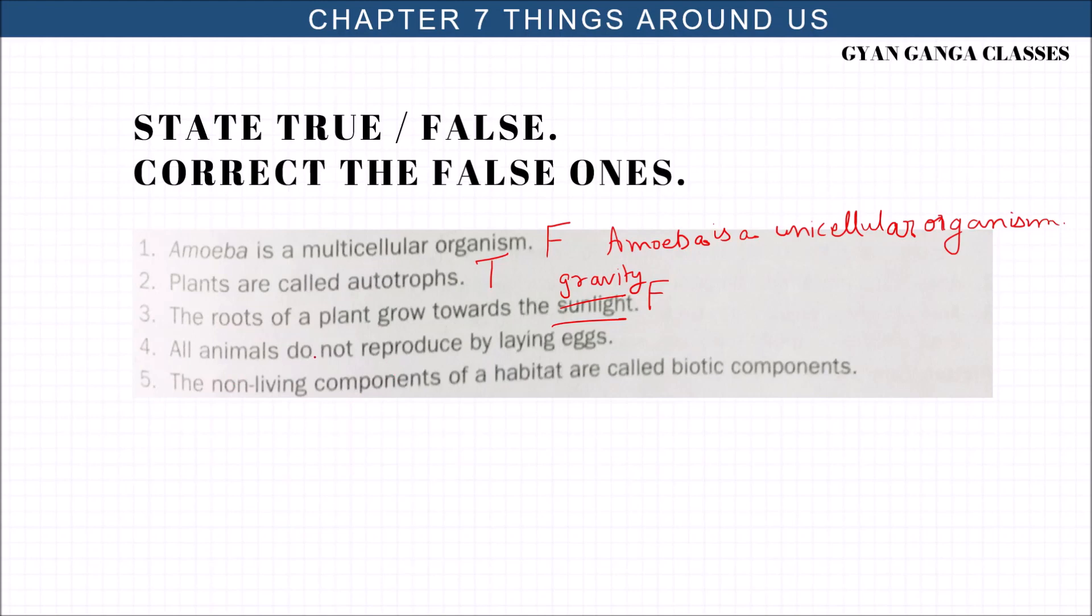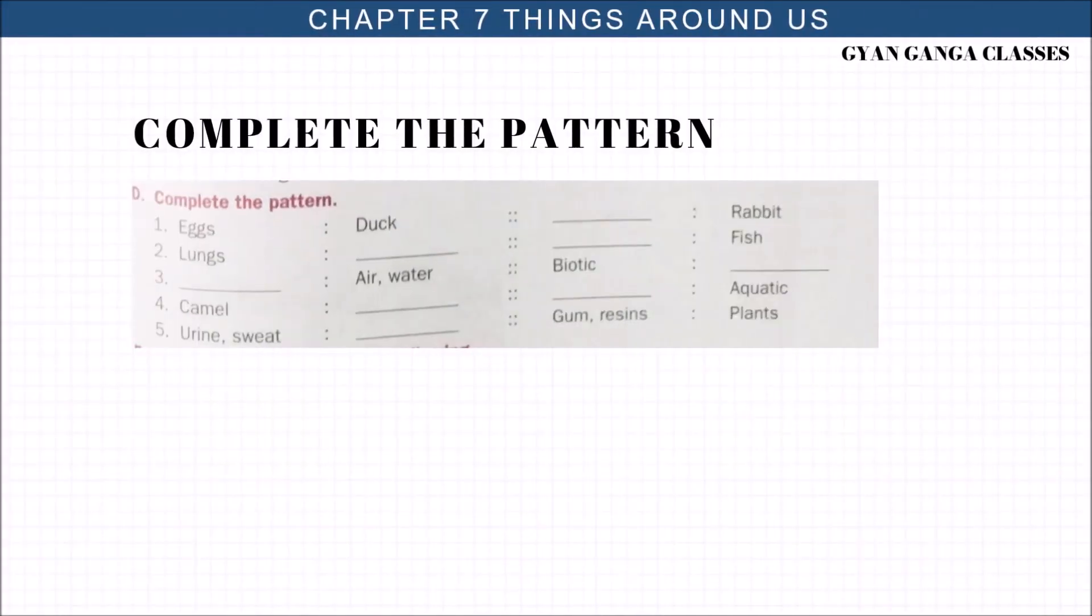All animals do not reproduce by laying eggs. True. The non-living component of habitat are the biotic components. Is it true friends? No, it is false. The non-living things of habitat are not biotic components. You can say they are the abiotic components.